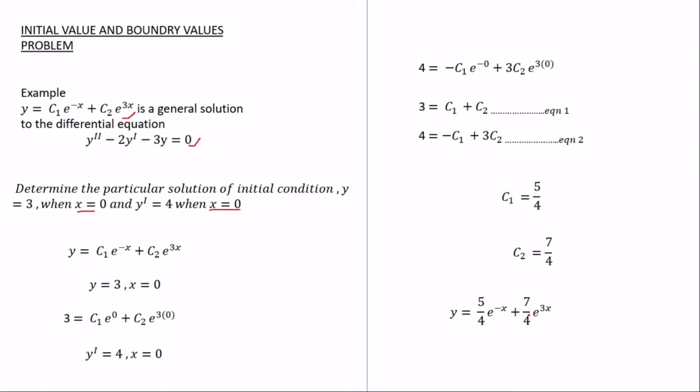With boundary value problems, you are given different x-values in the conditions, so you solve two equations with different x substitutions. That is the key difference: initial value problems have the same x-value for all conditions, while boundary value problems have different x-values. Thank you very much for watching — please comment, like, share, and subscribe.